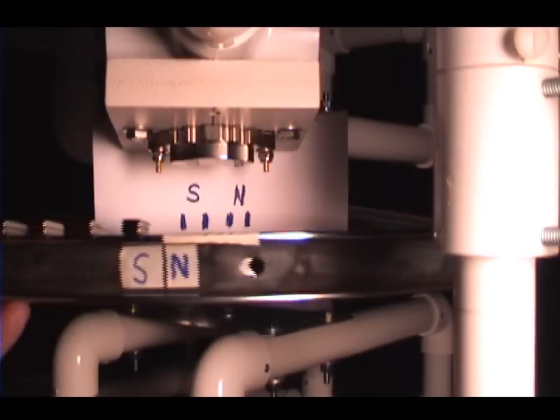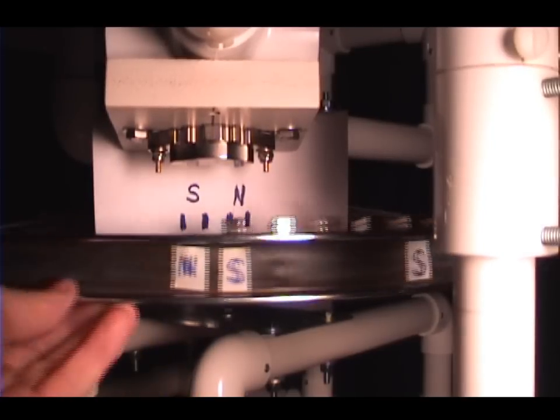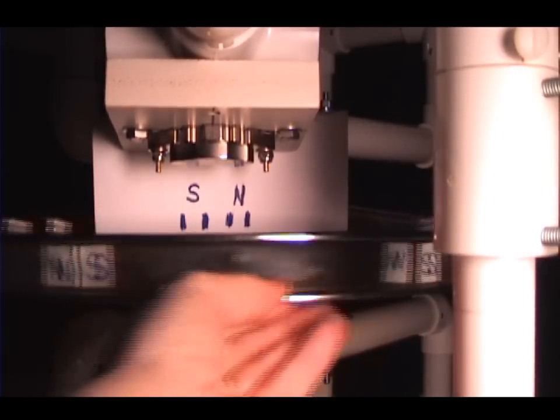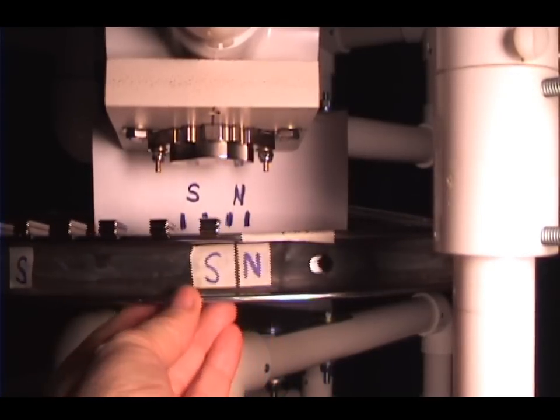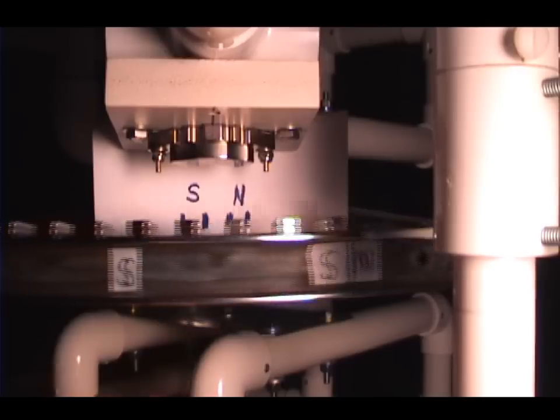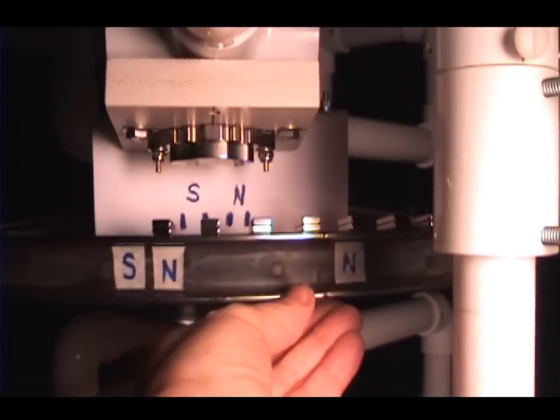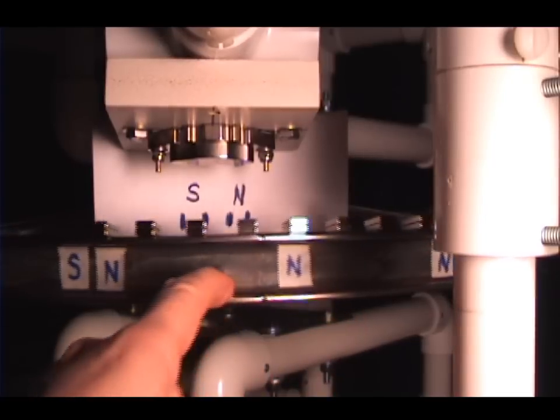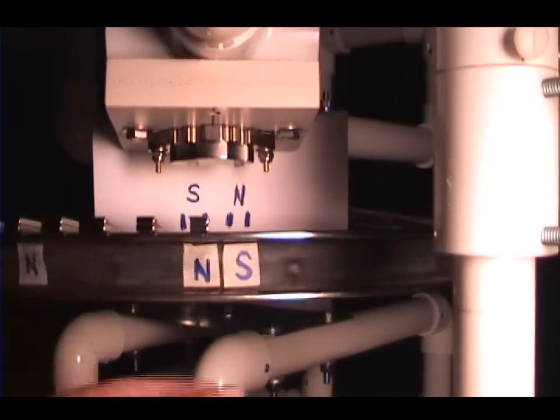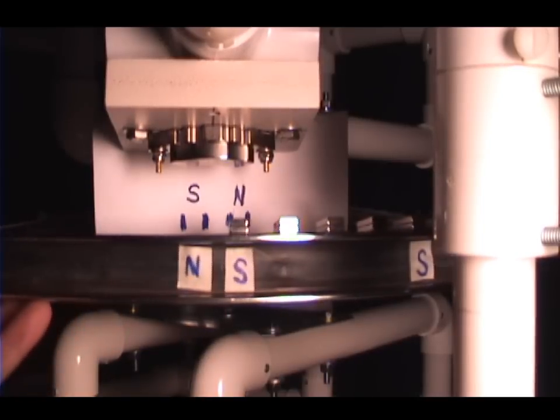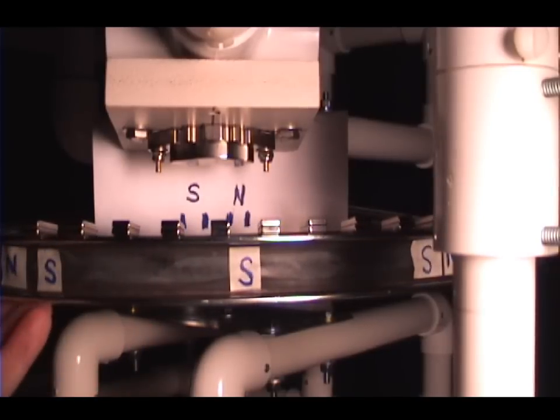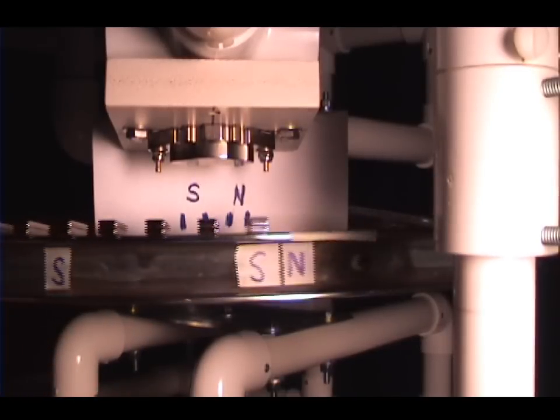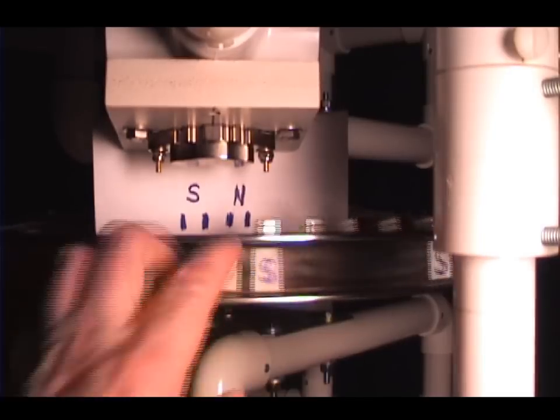Now, the reason the rotor continues to rotate to the second group when I let go, instead of being pulled back in attraction here, is because the rotor is moving at a fast enough rate. It has momentum, inertia, and that's what keeps it going past this point.